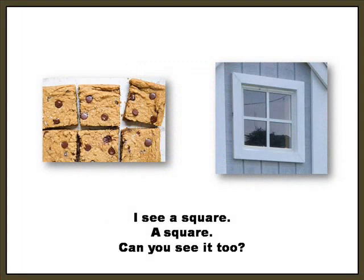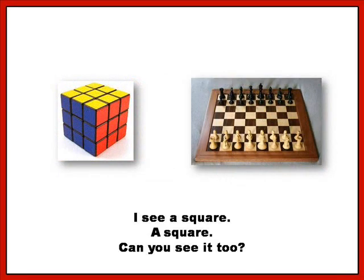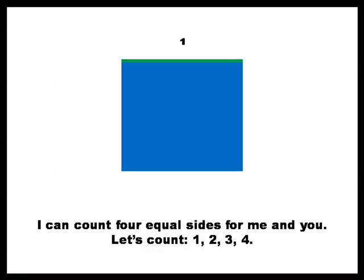I see a square, a square, can you see it too? I see a square, a square, can you see it too? I can count four equal sides for me and you.